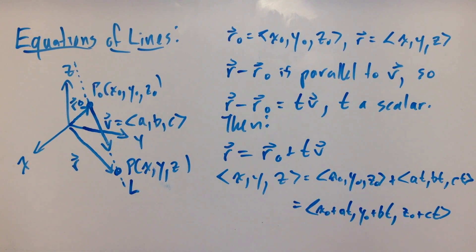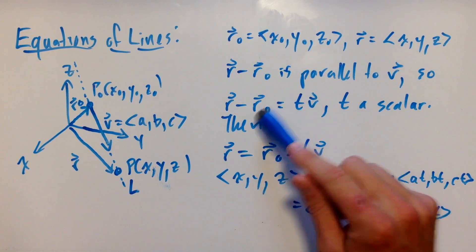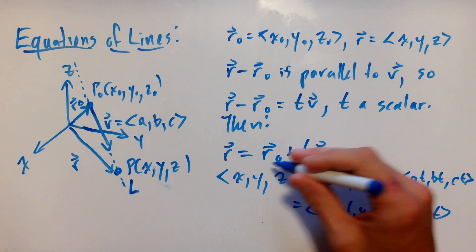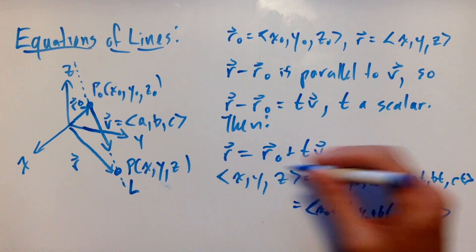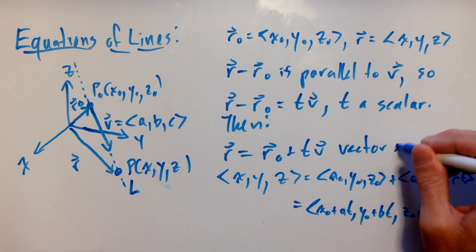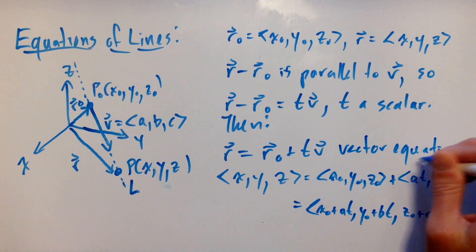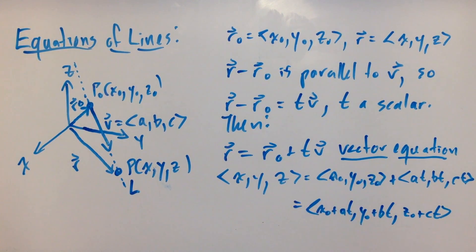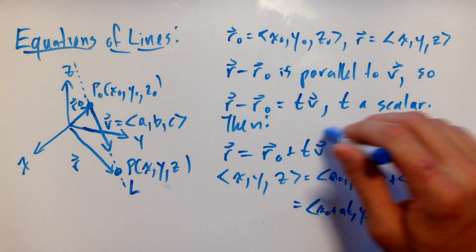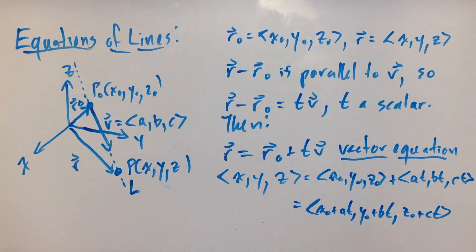Now r minus r0 is a vector along the line L, so it goes in the same direction as v, it's parallel to v. That means r minus r0 has to be a scalar multiple of v, t times v, where t is some scalar. Then adding r0 to both sides, we get the vector equation for a line: r = r0 + tv.